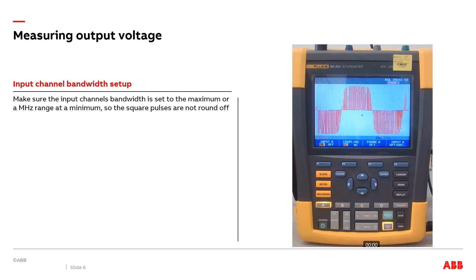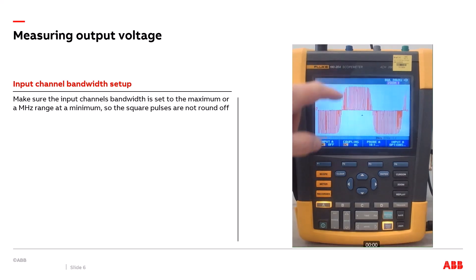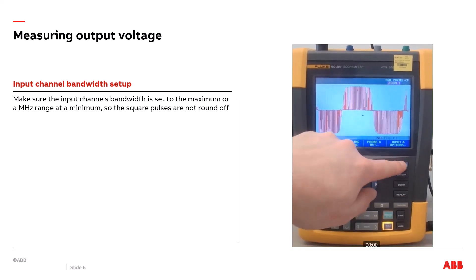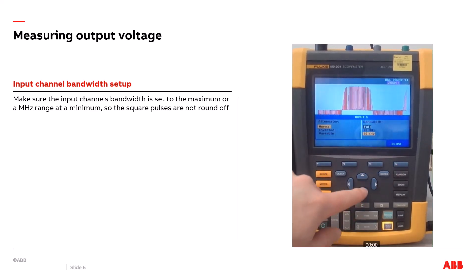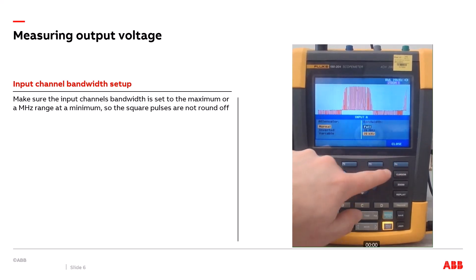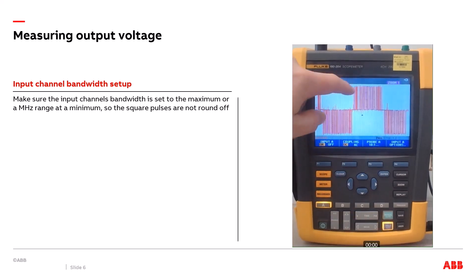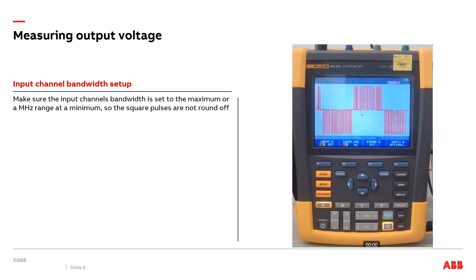As you can see in the scope image on the right, the corners are rounded off at the top and bottom. This is because the bandwidth on channel A is set to only 20 kilohertz. You want to set the bandwidth to full — or the maximum rating of your scope — so you can see the full signal and not accidentally filter out any part of the signal you're trying to measure.